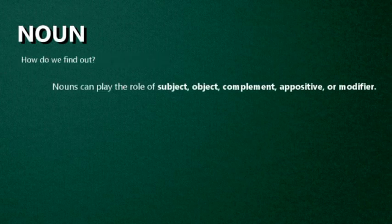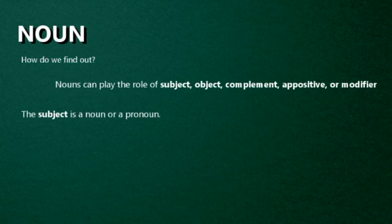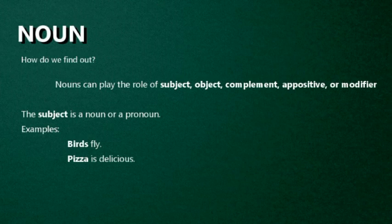How do we find a noun in a sentence? In a sentence, nouns can play the role of subject, object, complement, appositive, or modifier. A complete sentence usually consists of at least a subject and a verb. In most cases, the subject is a noun or a pronoun. For example: Birds fly. Pizza is delicious. Here, birds and pizza are the nouns which play the role of a subject. So the most basic role for a noun is to act as a subject for a verb that follows it.